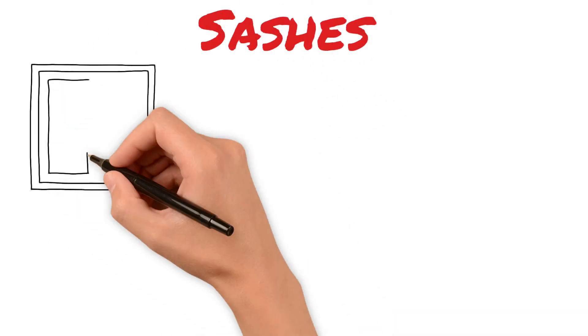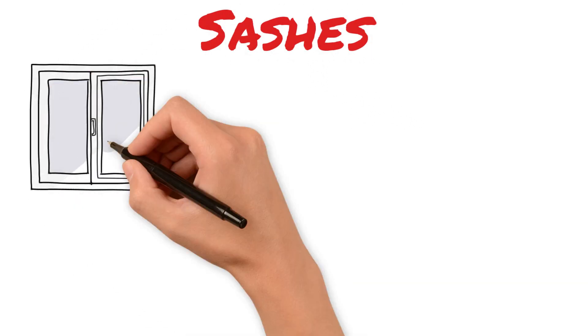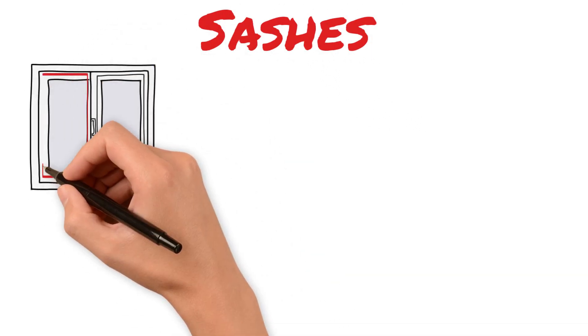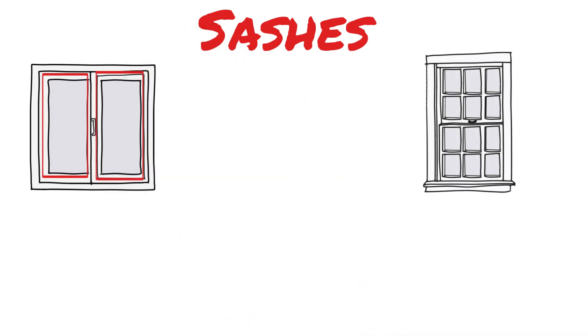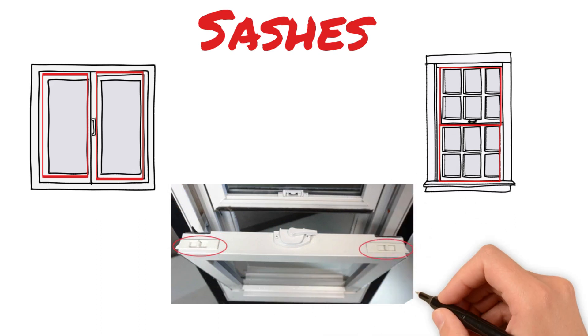Now, the sash. The sash of the window is the part that holds the glass in the framework around the glass to keep it in place. A sash may or may not be removable.